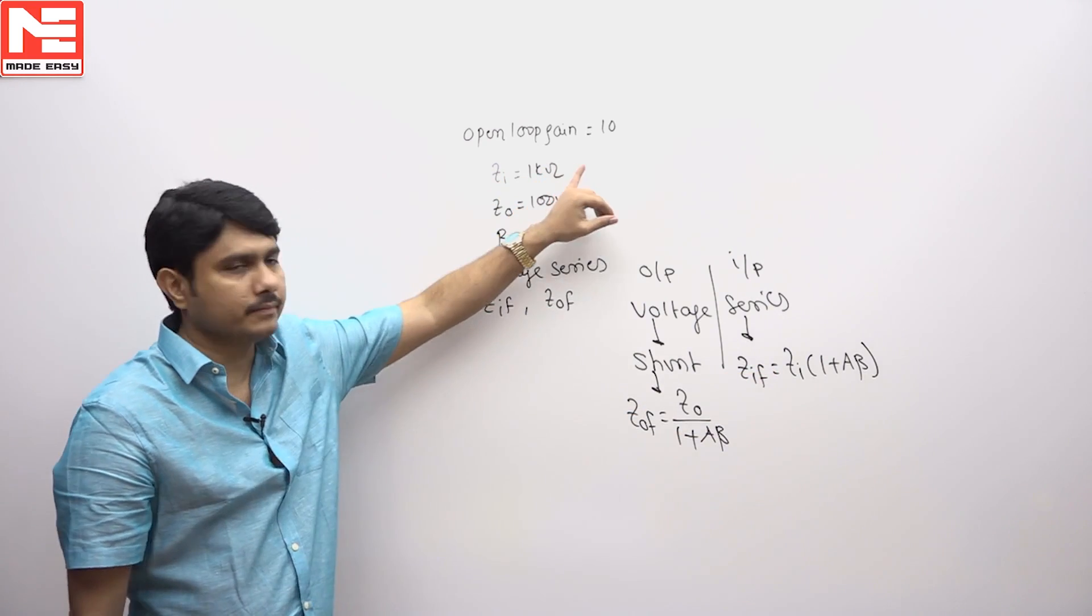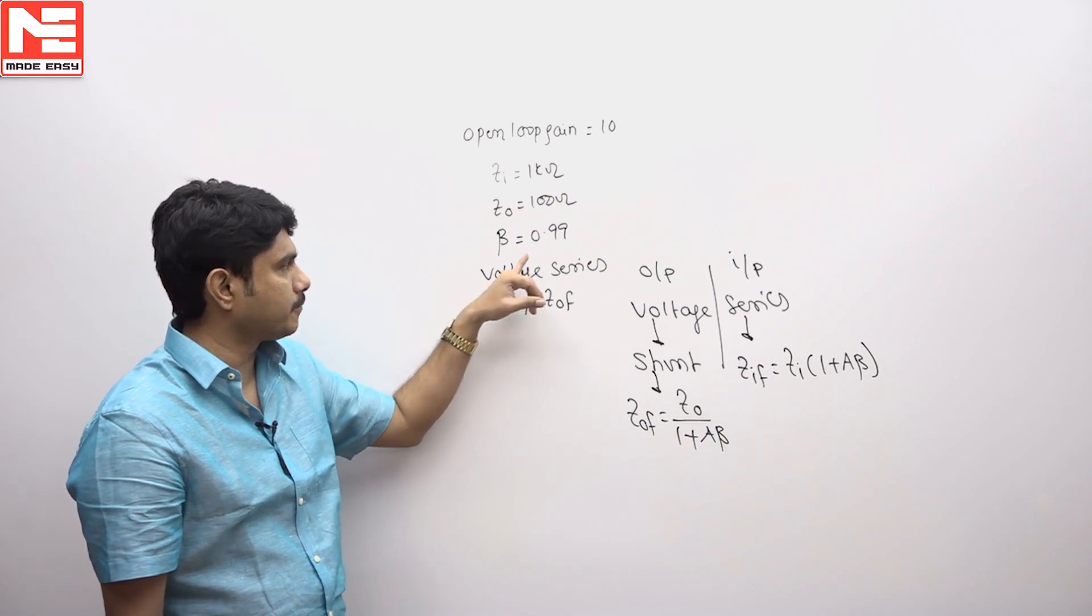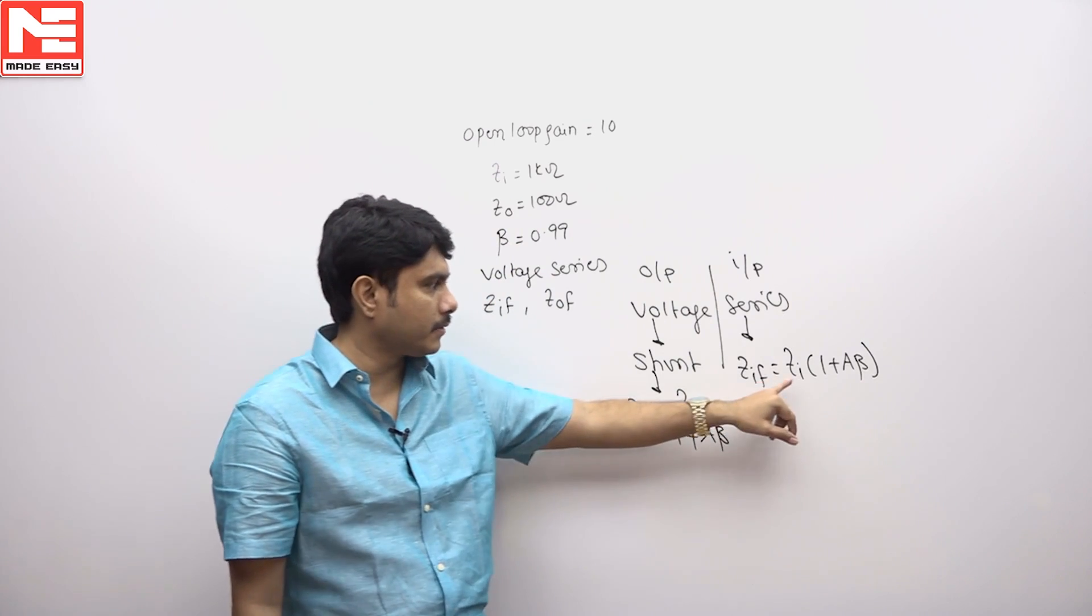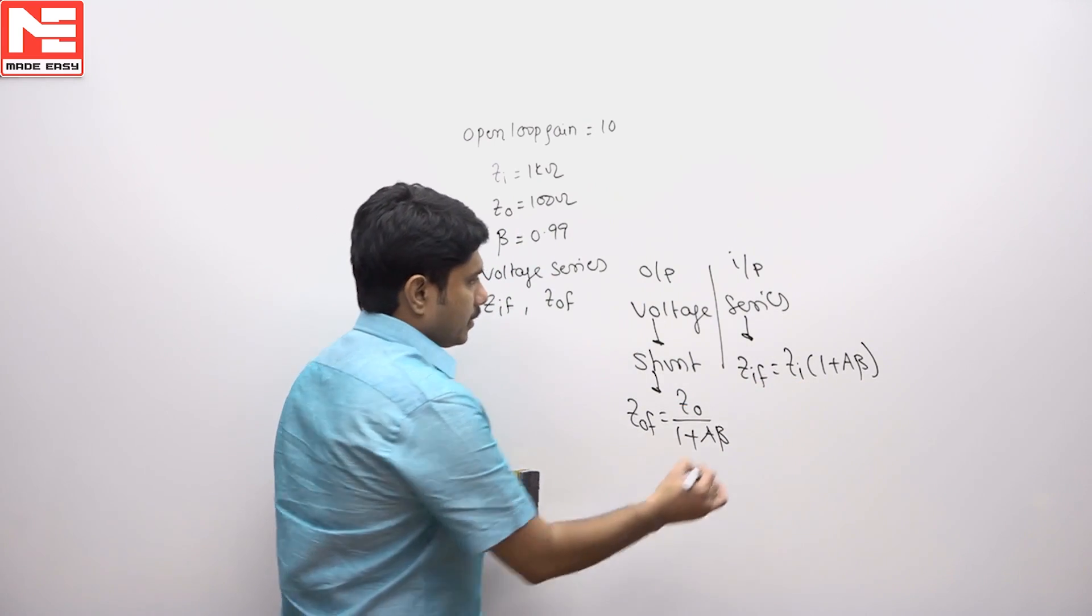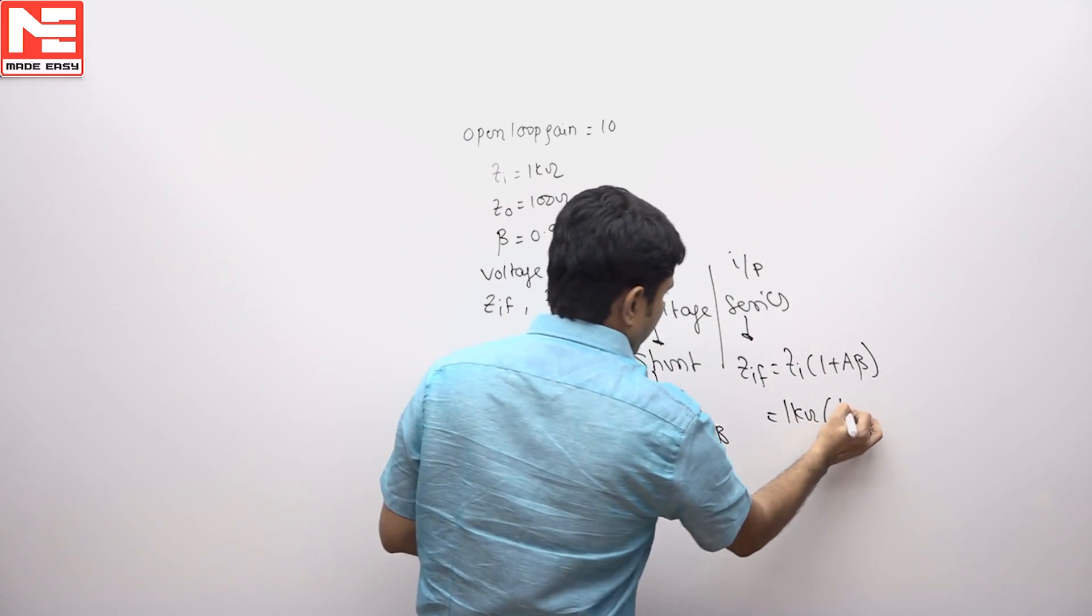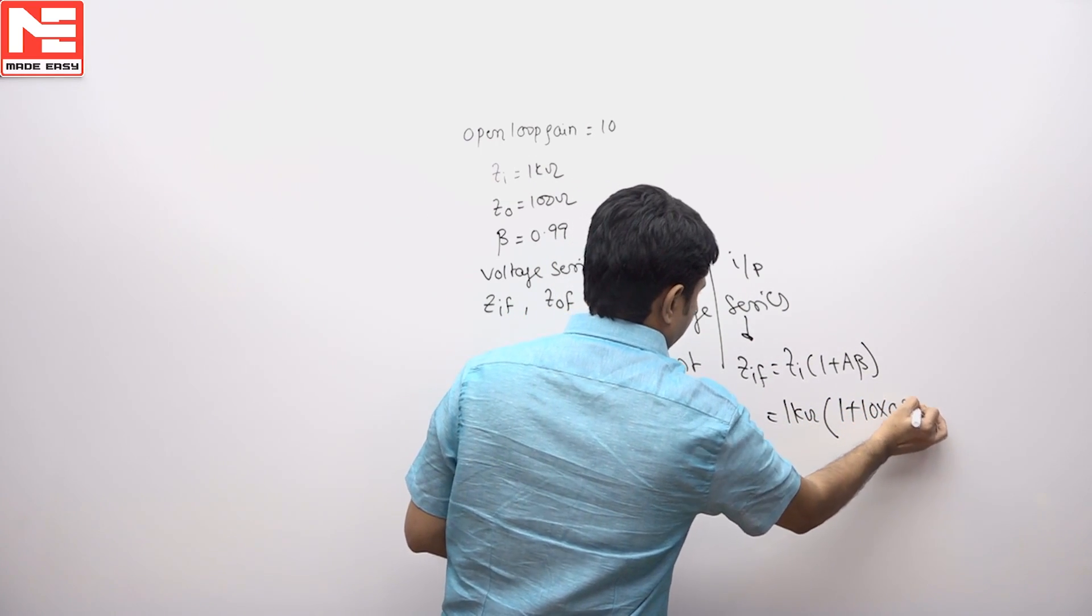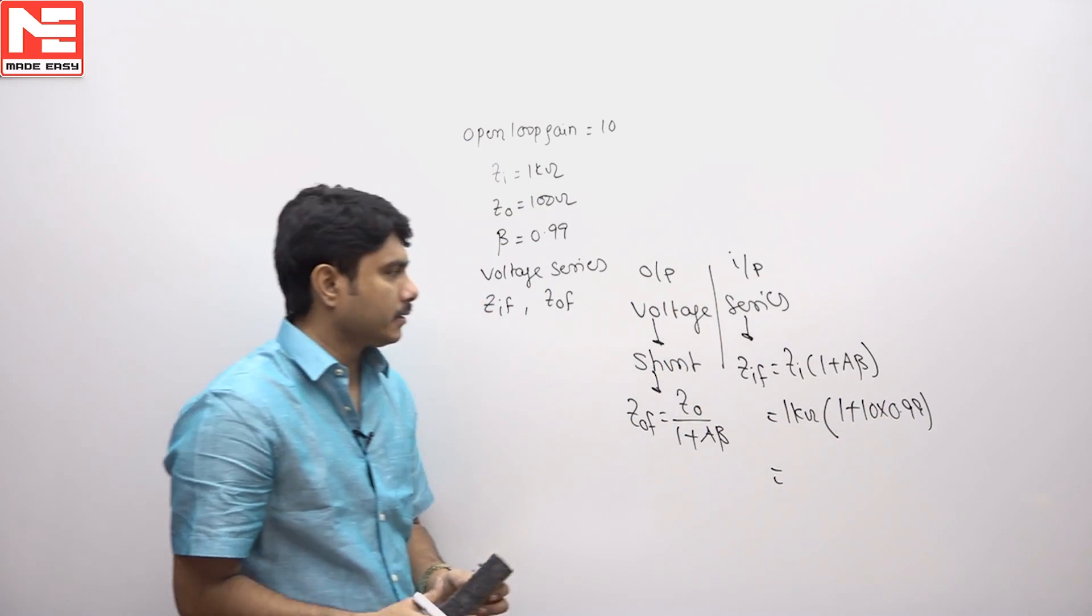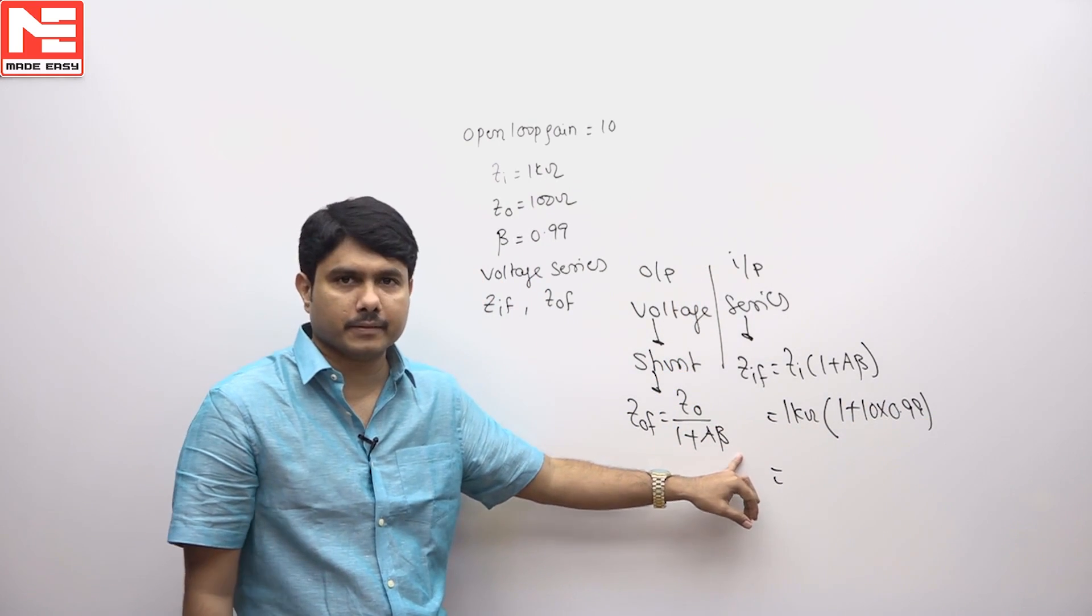A is already given as 10, and beta is 0.99. Applying these values, ZIF equals 1 kilohm times (1 plus 10 times 0.99). Calculating this gives the ZIF value.